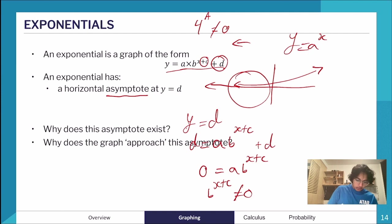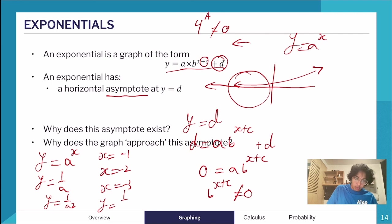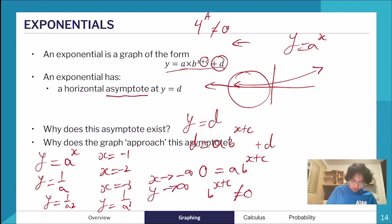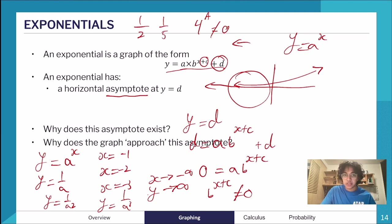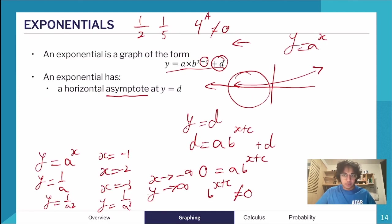To illustrate why the graph approaches the asymptote: take y = a^x. When x = −1, y = 1/a; x = −2 gives y = 1/a²; x = −3 gives y = 1/a³. As x approaches negative infinity, y approaches 0 because the larger the denominator, the closer the fraction is to zero. That's why the graph approaches but never touches the asymptote.